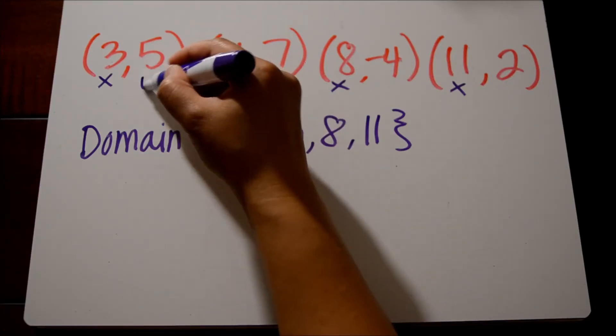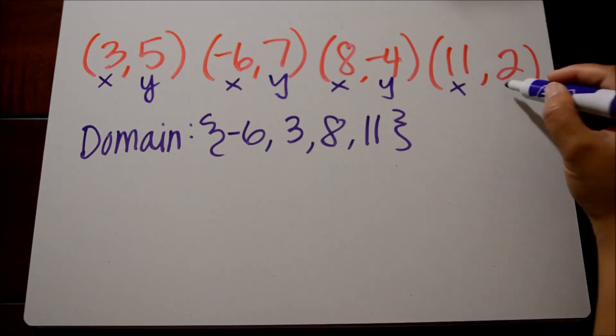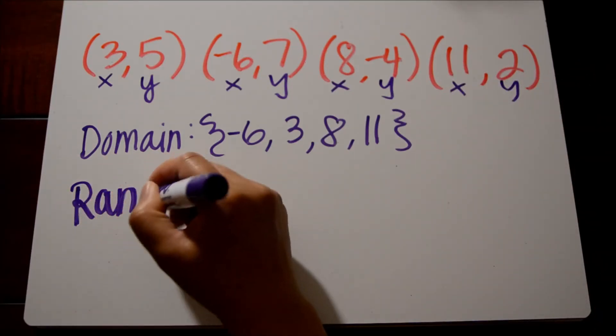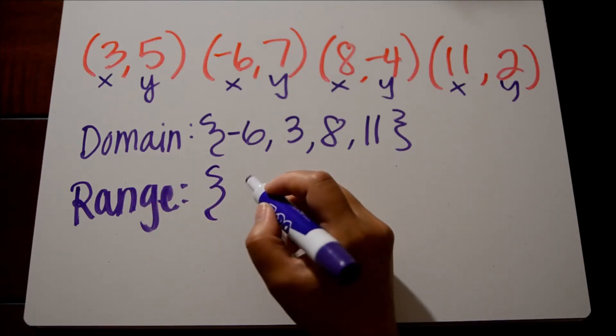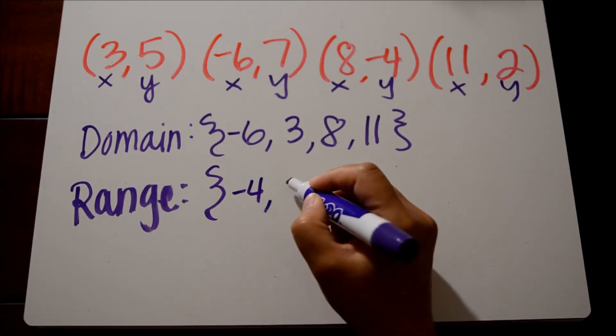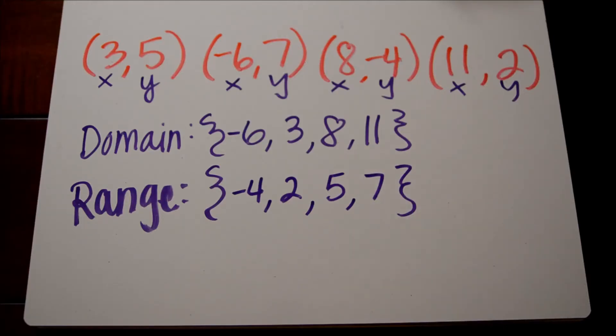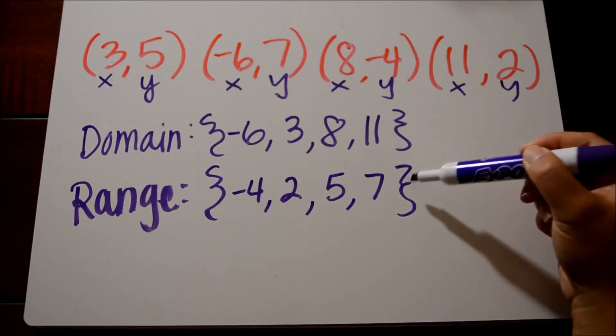Let's label the y values of these ordered pairs. These are going to be our range values, and again we write our range in order from least to greatest as well. So our range will be negative 4, 2, 5, and 7. With set notation we use these symbols here. These are called braces.